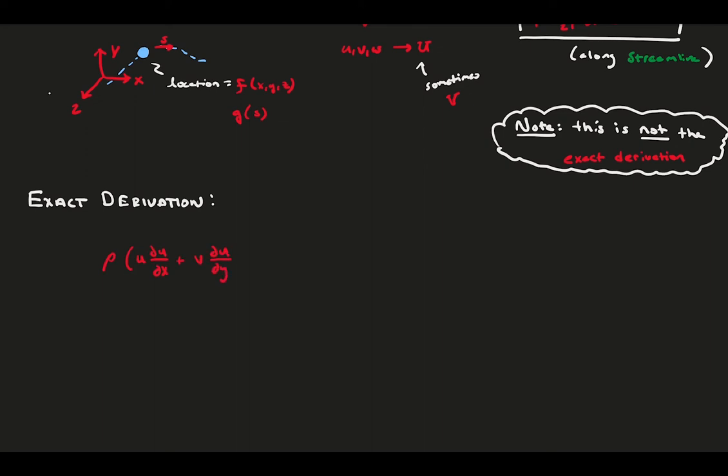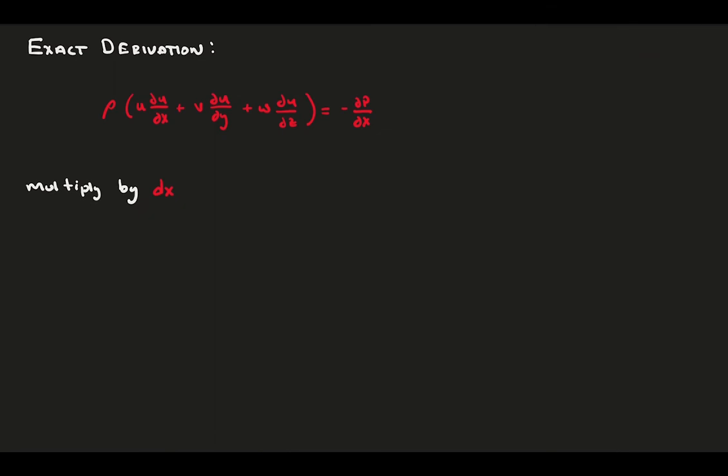Start with the conservation of momentum in the x direction for incompressible flow. Multiply both sides by dx for some reason and call that 1. We consider flow along a streamline, so we apply the streamline relations.